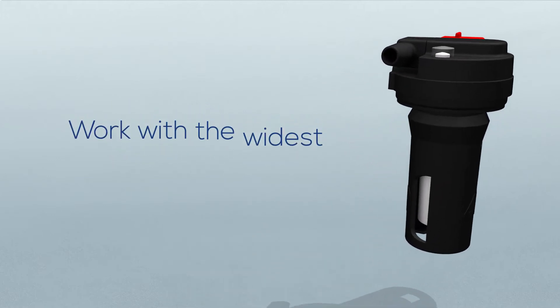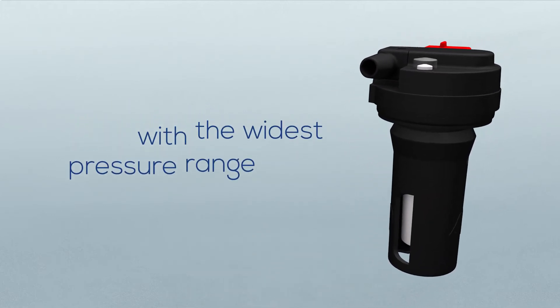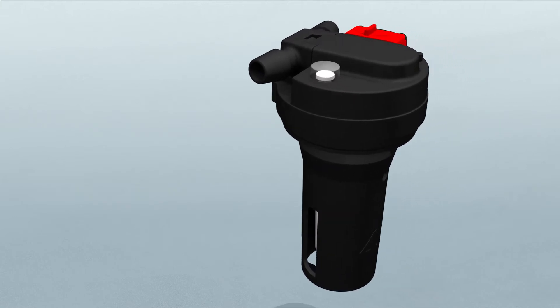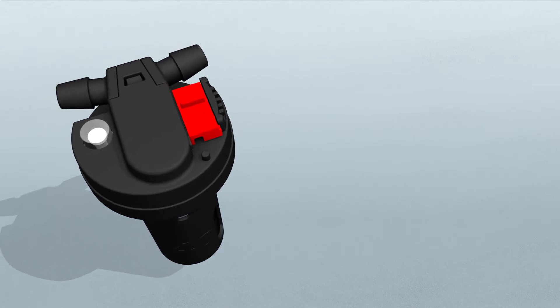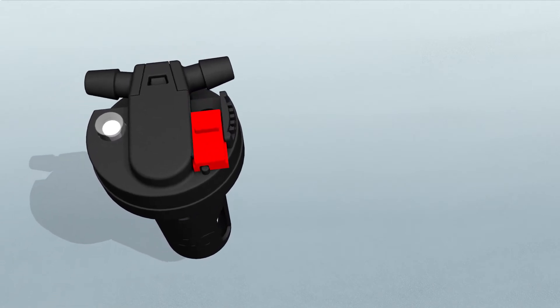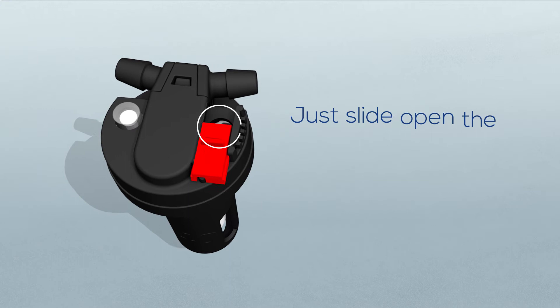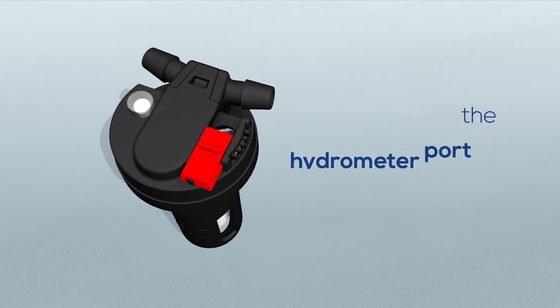Our valves work with the widest pressure range. Want to use that high-pressure hose or just rig up a gravity drip? No problem. Need a specific gravity reading for battery maintenance? No need to remove the valves. Just slide open the hydrometer port to take the electrolyte reading.